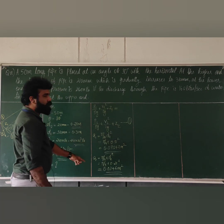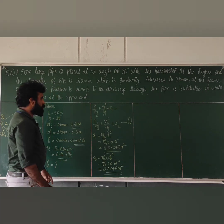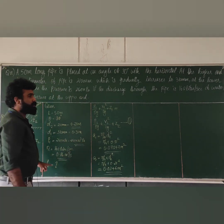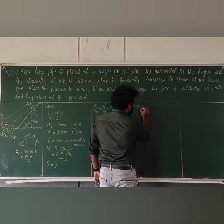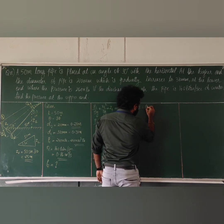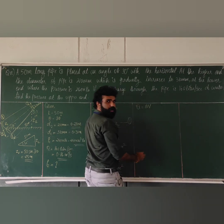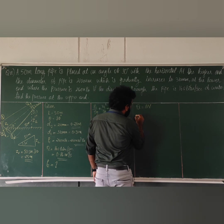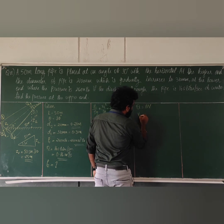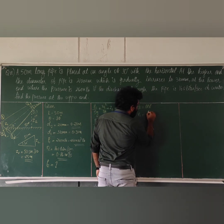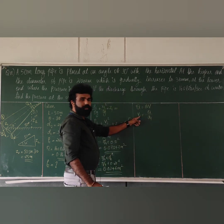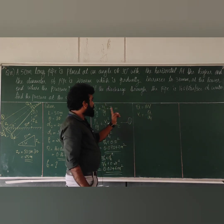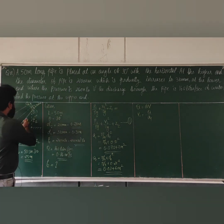Now that we have A1 and A2, and we have the discharge Q, we use Q = A × V. V1 = Q / A1 and V2 = Q / A2. The continuity equation gives A1V1 = A2V2 = Q. The discharge is constant since this is pipe flow.